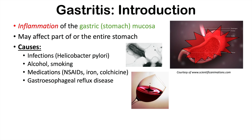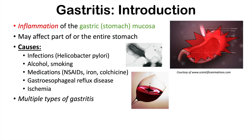And then ischemia — if there's not enough blood flow to the stomach to supply the tissues and the lining within the stomach, parts of the lining can die, and this can lead to gastritis. As you can see, there are many different causes of gastritis that lead to multiple types of gastritis. Most types are going to have very similar signs and symptoms, but some will have very specific signs and symptoms we'll talk about later in this lesson.